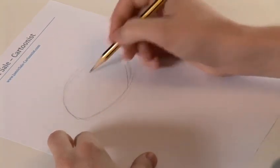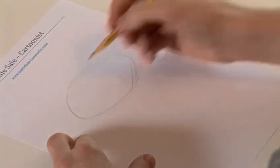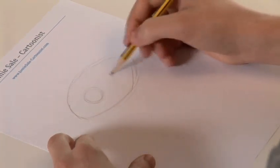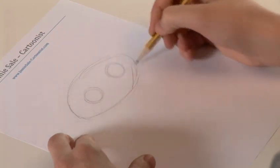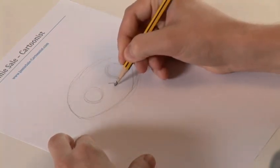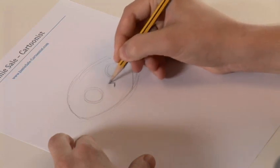Just sketch that in roughly first, and then he has two pretty big eyes set symmetrically apart from each other on either side of the face. He's got a bit of a triangle for a nose, half a triangle.